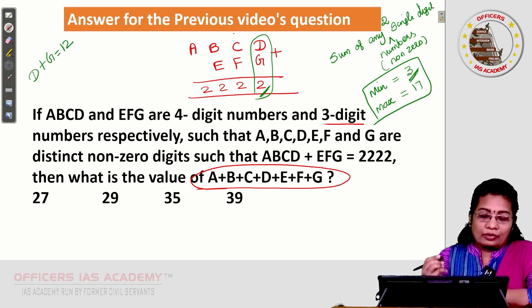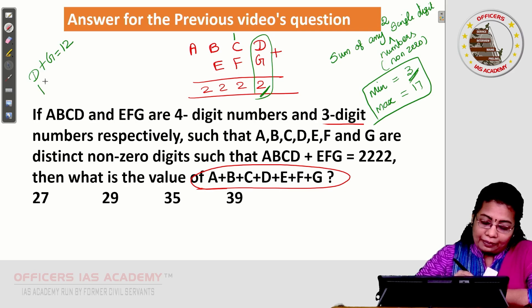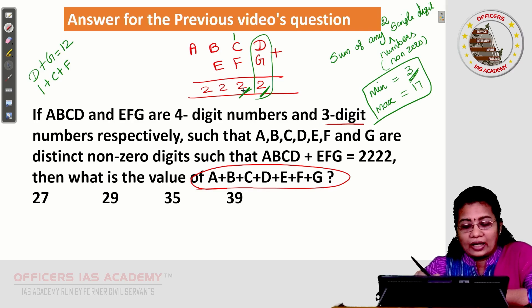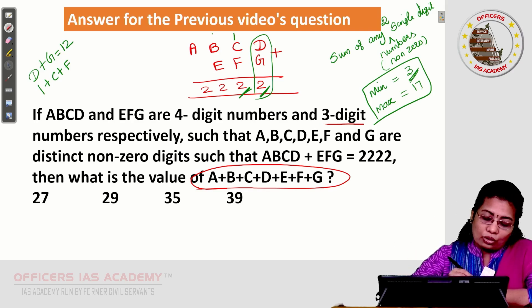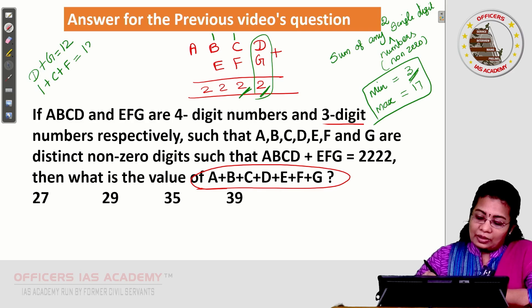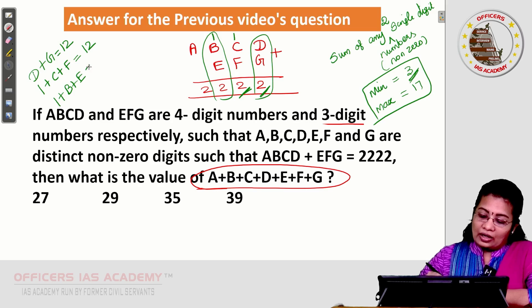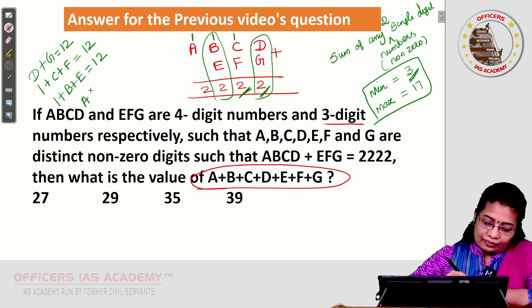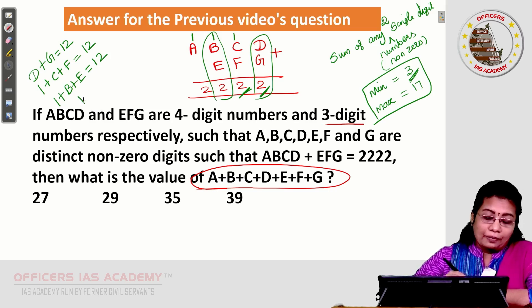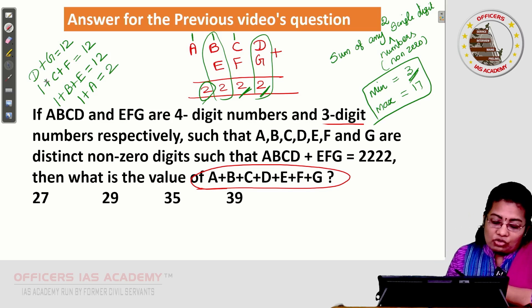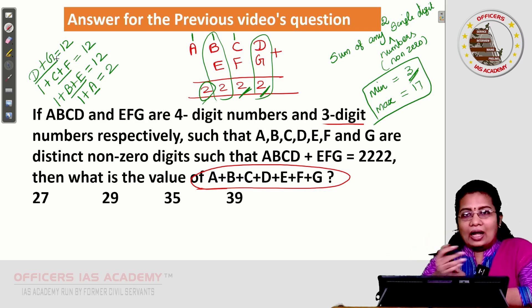Carry over 1. 1 plus C plus F, here also again 2. It is not just 2, it has to be 12. 2 taken here, balance 1. 1 plus C plus F, 12 again. Similarly, you can take this 1 plus B plus E is again 12. At last, A we got. Carry over 1. 1 plus A, which gives us 2 at the last. Now, tell me what is D plus G, C plus F, B plus E, A. All together, you can add up and tell me the result.